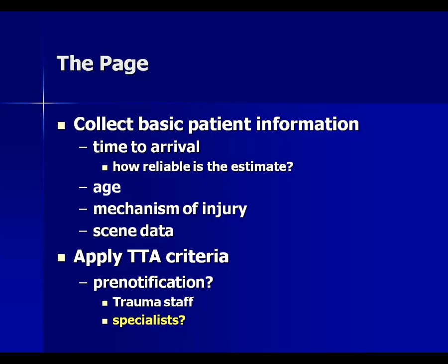The page will give an indication of the patient's age. This is important because if they are less than 16, they are automatically a pediatric patient and things change a little bit. It will attempt to describe the mechanism of injury and potential scene data, including scene vital signs if available. If not already done, trauma team activation criteria can be applied at this point to determine whether this should actually be a trauma team activation. In some cases, pre-notification of key people such as the trauma surgeon may be in order, especially if it looks like it might require rapid operation.